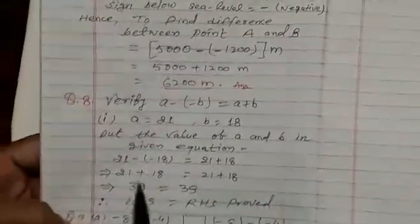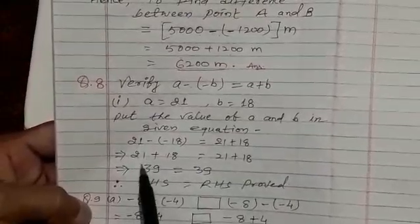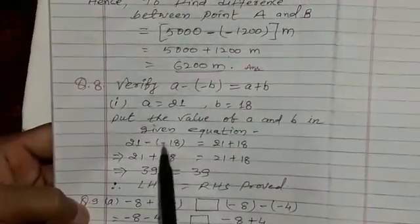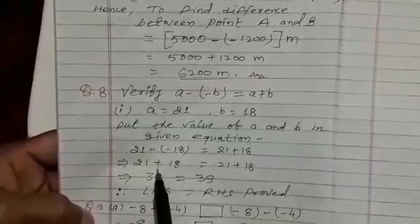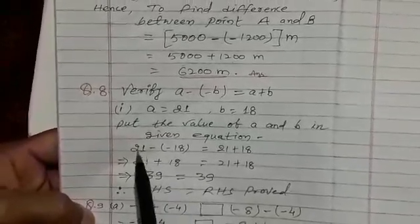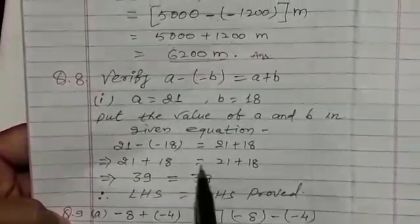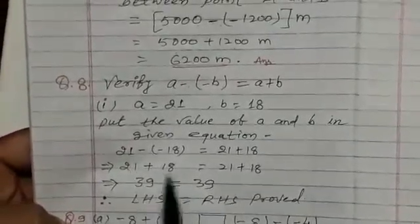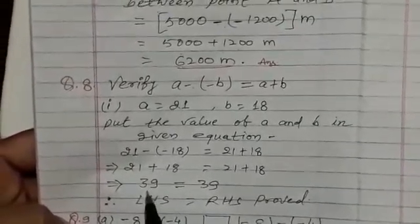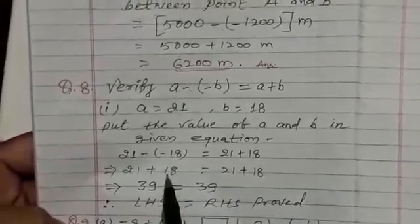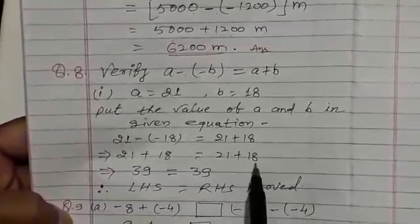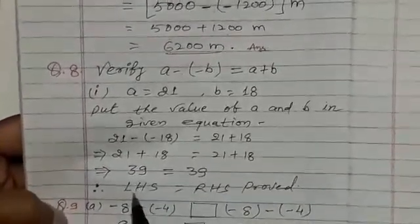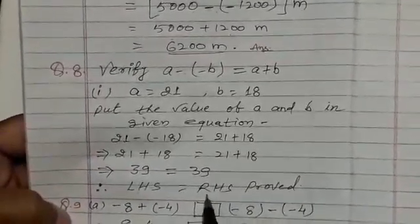So write here, now 21 and a negative sign, and negative sign multiply to each other and becomes plus. So you write here, 21 plus 18, equal to 21 plus 18, you add this, 39. 21 plus 18, becomes 39, and 21 plus 18, becomes 39. So LHS equal to RHS, and your equation is verified.